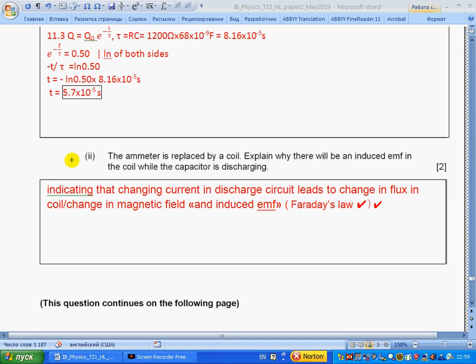Part b: The student uses a switch to charge and discharge the capacitor using the circuit shown. The ammeter is ideal. The emf of the battery is 12 volts. The resistor R in the circuit has resistance 1.2 kilohms. Calculate the time taken for the charge on the capacitor to fall to 50% of its fully charged value.